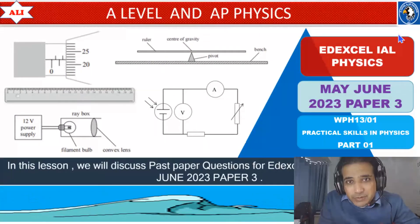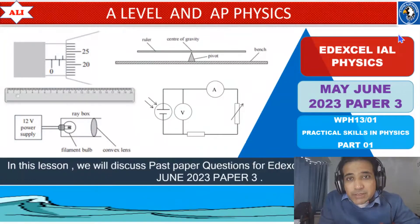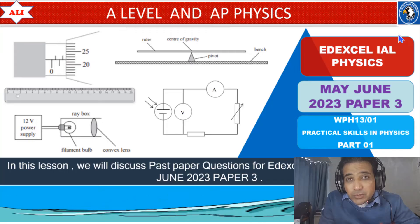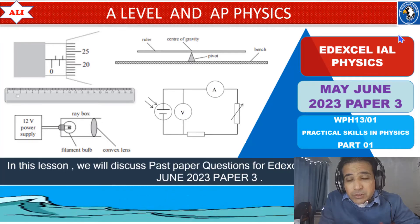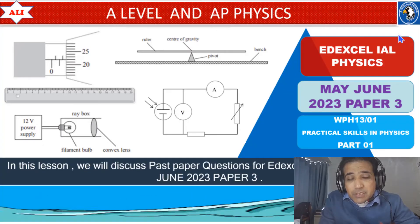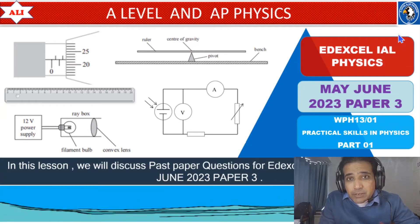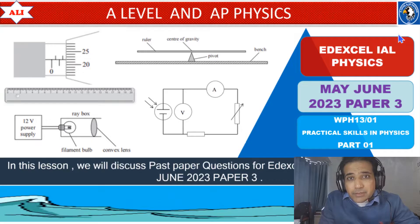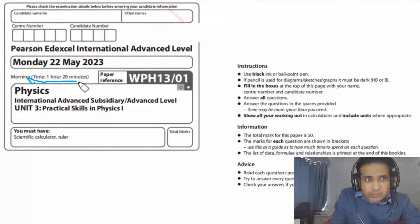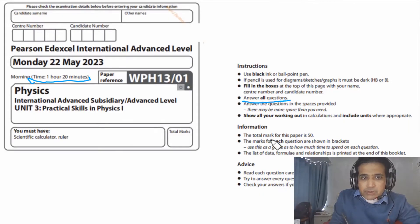Welcome to A Level and AP Physics. In today's lesson we will discuss past paper questions from May June 2020 theory. As always, we will discuss these questions in detail so you can improve your understanding of practical skills in physics. Total time for this exam is 1 hour and 20 minutes. You need to answer all questions and total marks for this paper is 50.